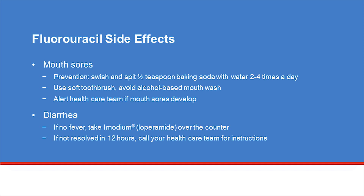Fluorouracil is usually well tolerated, but some side effects include mouth sores and diarrhea. Preventing mouth sores is the key. You can make a home mixture of baking soda and water — swish and spit two to four times daily. Using a soft-bristled toothbrush and good oral hygiene can also help reduce mouth sores. If you still develop mouth sores, notify your healthcare team.